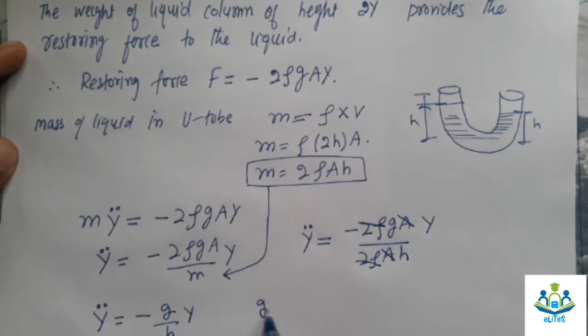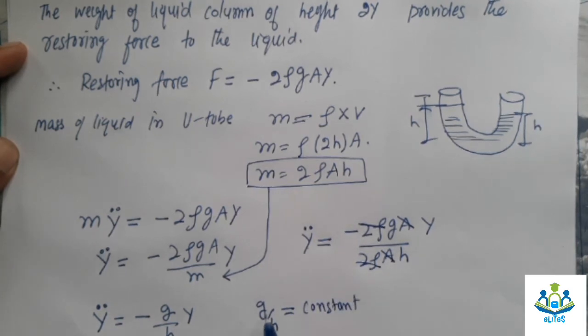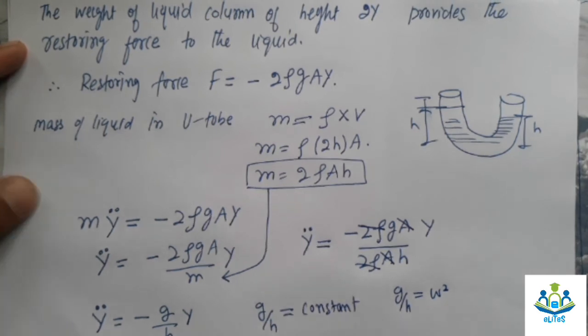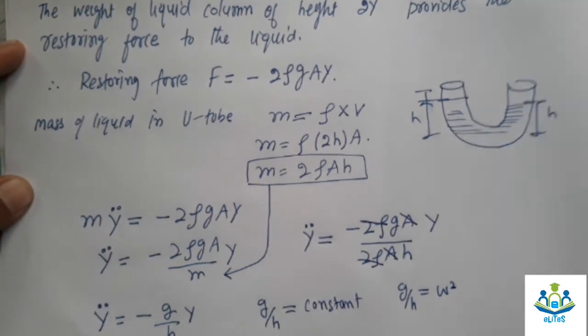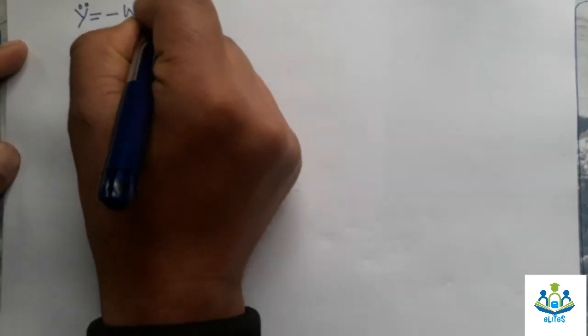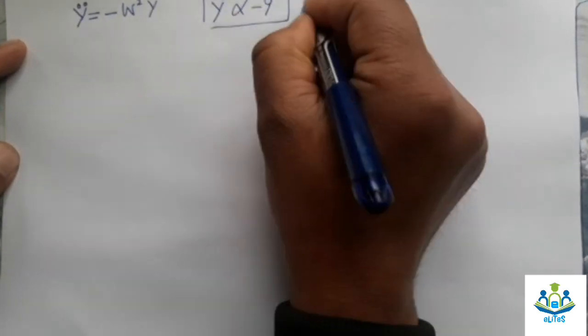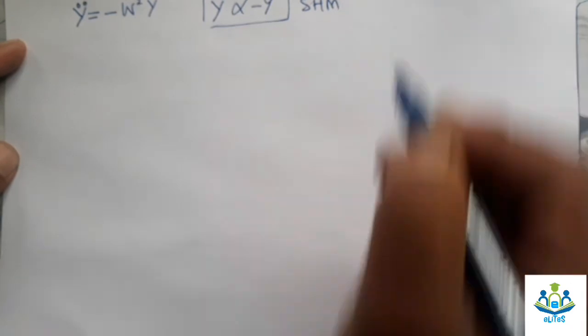And this g over H is a constant, because g is fixed and H is also fixed. Let this g over H be ω². Then we will have this equation: Ÿ = -ω²Y. And you see this acceleration is proportional to negative times Y, so this is simple harmonic motion.